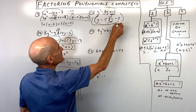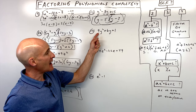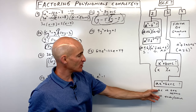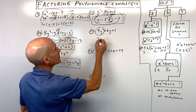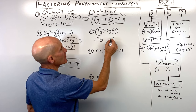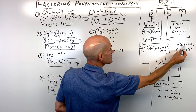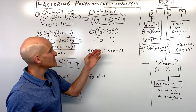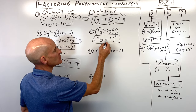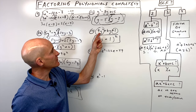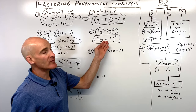Number fourteen, three terms, no greatest common factor, leading coefficient not 1. What jumps out is that the first term is a perfect square — 3y times 3y — and the last term is a perfect square — 1 times 1. If I take 3y times 1, that's 3y, doubled is 6y, which matches the middle term. So this fits the perfect square trinomial pattern a squared plus 2ab plus b squared, and factors as 3y plus 1 quantity squared. Note the last term must be positive to be a perfect square.